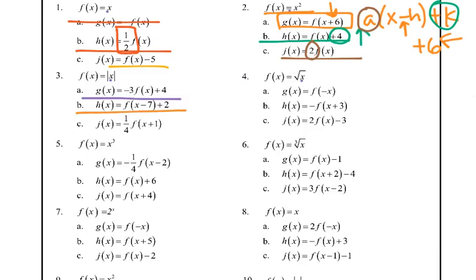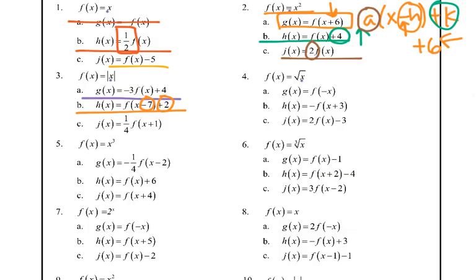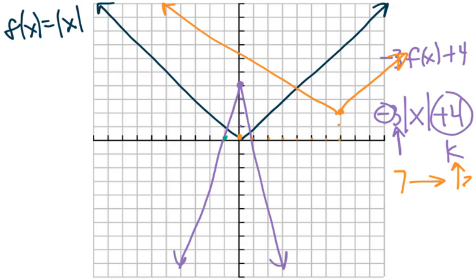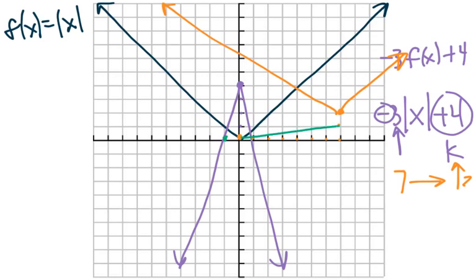For part b, we've got minus 7 on the inside — that's h, and it's opposite, so we go to the right 7. Then the plus 2 outside means we go up 2. So from this vertex we go to the right 7 and up 2, then draw that same basic shape. For c, the h on the inside is a plus, so we think opposite — it's like negative one, so we move it to the left one. Then one-fourth: it's not negative so it keeps going up, but one-fourth means it's got that horizontal stretch, so it's actually going to end up being a lot wider.